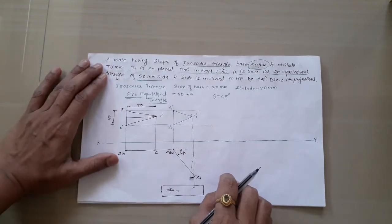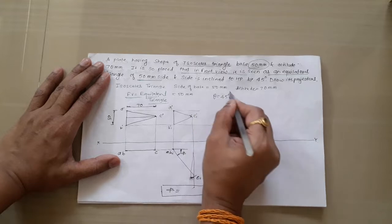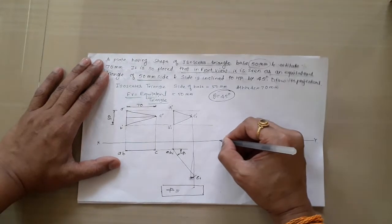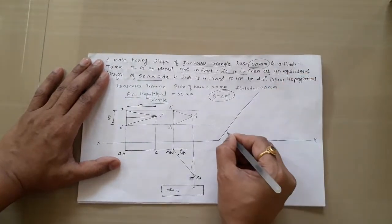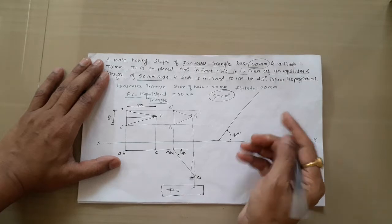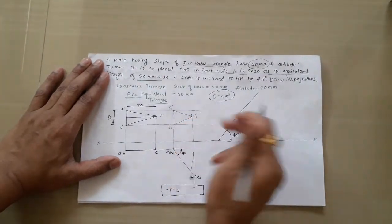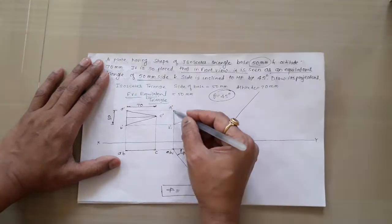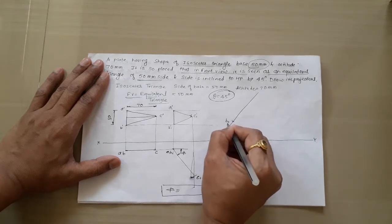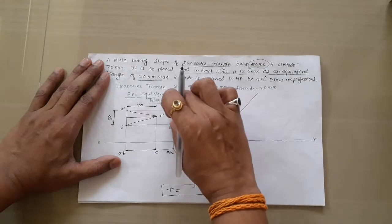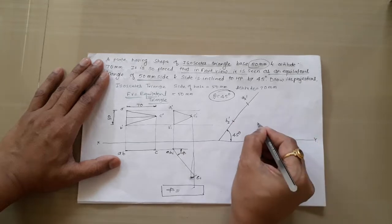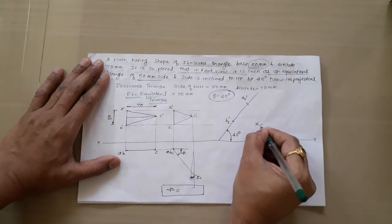In the last stage, the side of the equilateral triangle is inclined to HP by 45 degrees. Inclination with HP is always seen in the front view, so draw a line inclined at 45 degrees. On this line, redraw the second-stage front view. The only difference is that A1-dash B1-dash, which was perpendicular to XY, is now made inclined to XY. Mark B2-dash, then with B1-dash as center mark A2-dash, then take 50mm and cut arc to get C2-dash.